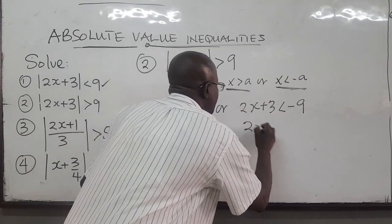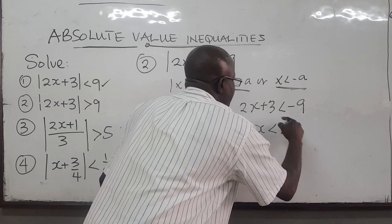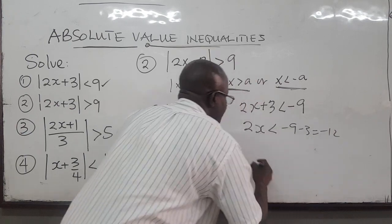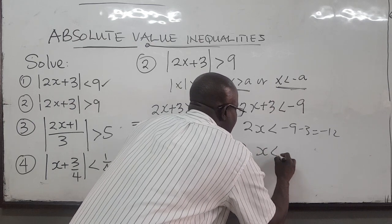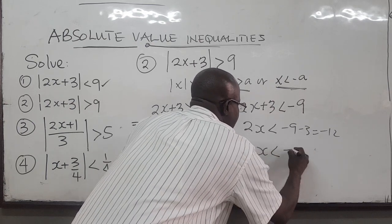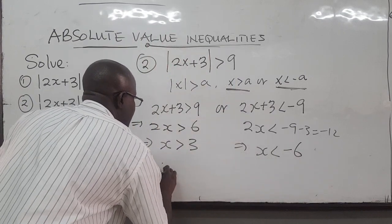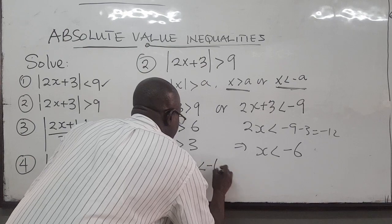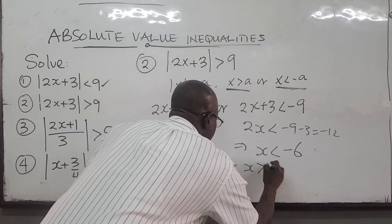From the second case, 2x is less than negative 9 minus 3, which is negative 12. Dividing by 2, we get x is less than negative 6. Therefore, x is less than negative 6 or x is greater than 3.